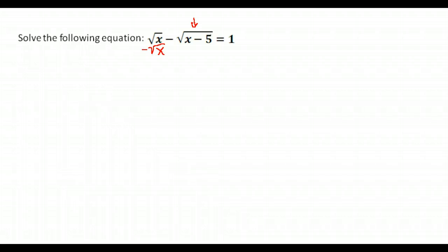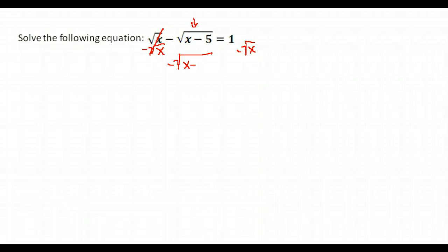So I need to move the other to the opposite side. It's a positive root x. To remove it, I would subtract root x from both sides. And that gives me the negative square root of x minus 5 is equal to 1 minus the square root of x.